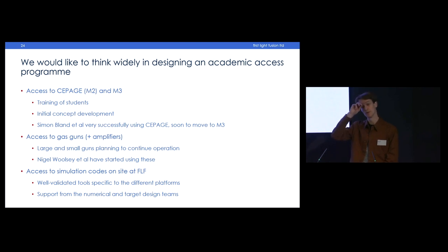We would like to think really widely about the scope of any academic access program we create. This is about thinking about the biggest opportunity, the best opportunity we could put together. In our minds this is not just about machine four, it's also about our existing machines, Cepage and M3. These are smaller platforms we intend to maintain. They offer opportunities for training students, initial concept development. Simon who's here has very successfully moved through this process, having done campaigns on Cepage and will be working on M3 soon. The gas guns are going to still be operational, and gas guns plus our amplifier technology can potentially lift the range of what you can do quite substantially.